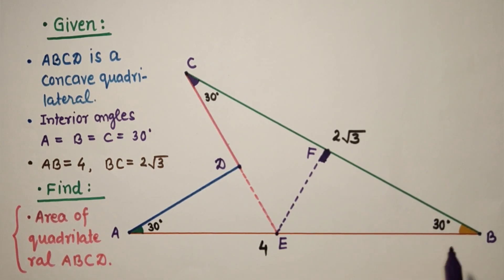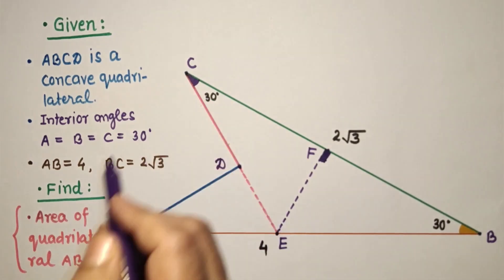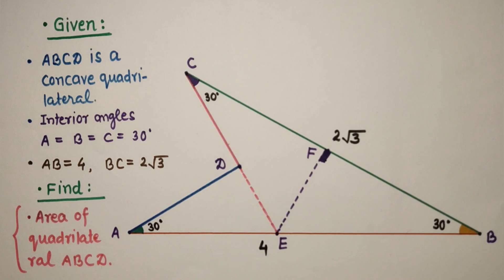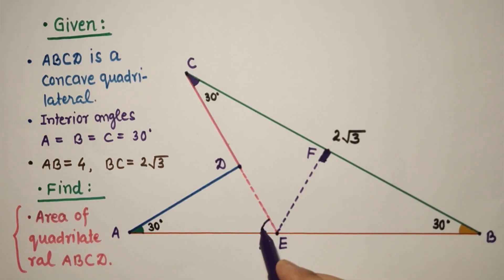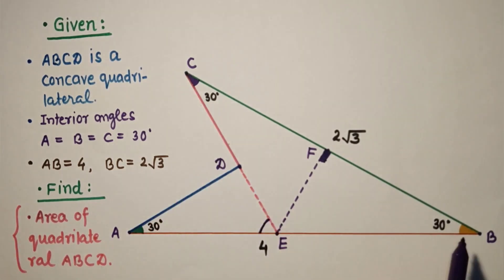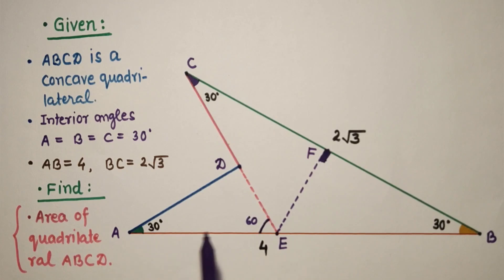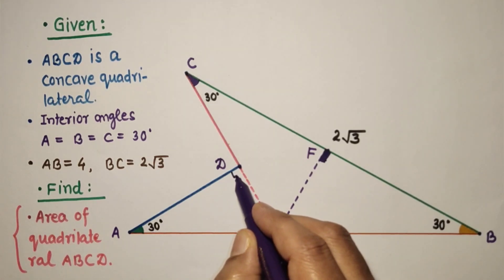Now since this angle is 30 degrees and this angle is 30 degrees, it means that BE and EC are equal. This angle will be an exterior angle and will be the sum of these two remote interior angles, so this is 60 degrees. And if this is 30 and this is 60, then this will be 90 degrees.